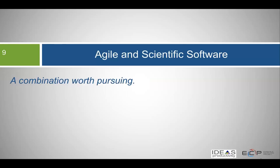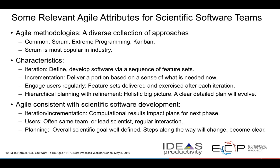I want to argue that agile and scientific software are a combination worth pursuing. There are a lot of different agile methodologies — the most common are Scrum, Kanban, and extreme programming. Scrum is certainly the most popular in industry, with upwards of 80% of teams saying they use it. Its characteristics include iteration, incrementation, engaging users, and a hierarchical planning approach, which is quite consistent with scientific software development.